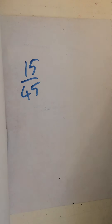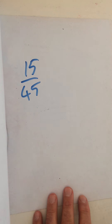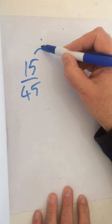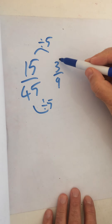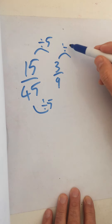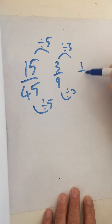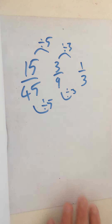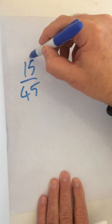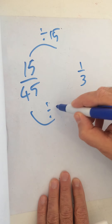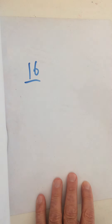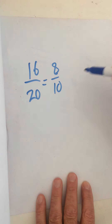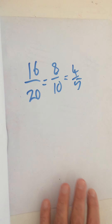You get fifteen over forty-five. I can see that five is a factor of both, so I divide both by five to get three over nine. Then I can see three is a factor of both, giving one third. I could have done that straight away because the highest common factor of 15 and 45 is 15. For sixteen twentieths, one way is to keep halving until you can't halve anymore, giving four fifths.